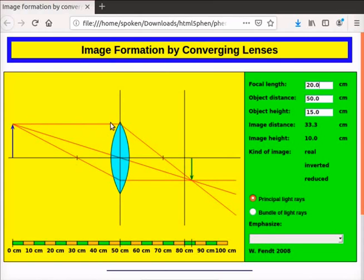The ray emerging from the object is parallel to the principal axis of the lens. This ray, after refraction, passes through the second principal focus F prime. A second ray of light passes through the optical center of the lens. This ray, after refraction, emerges without any deviation.